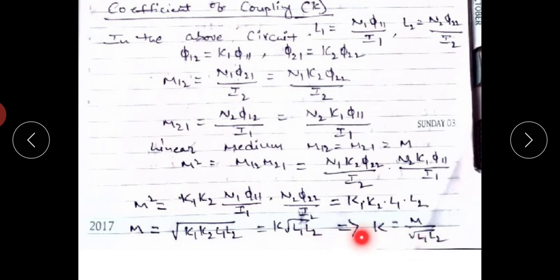K is called the coefficient of coupling. For a tightly coupled circuit, K equals 1. K is always less than or equal to 1, and it has no units — inductance divided by inductance cancels out.